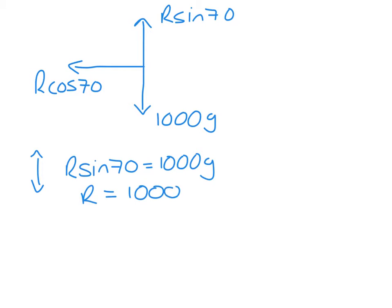is 1000G over sin 70, which gives us an answer of 10,428.9. Now this is an answer the examiners asked for, so we have to round to three significant figures.